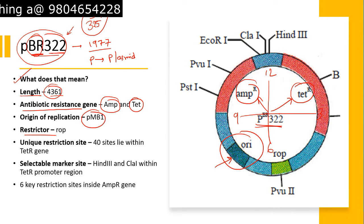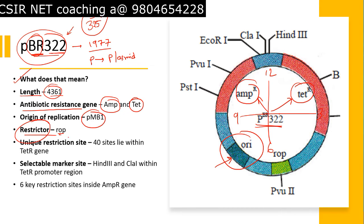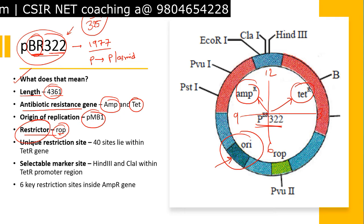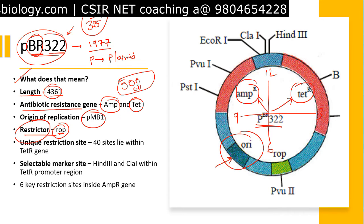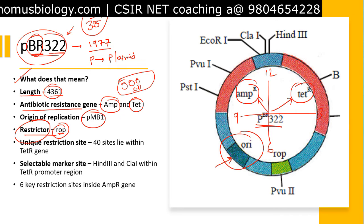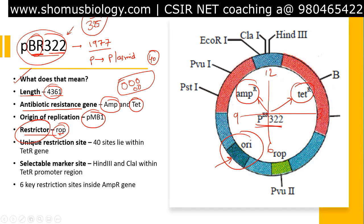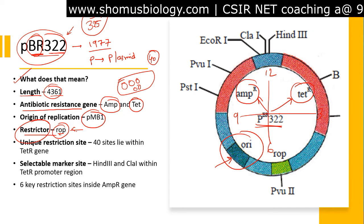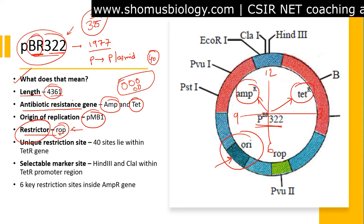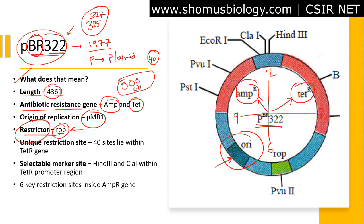PBR322 also has a restrictor region known as ROP. This ROP region is present to restrict the copy number of the plasmid inside the host cell. The copy number is the number of plasmid copies present inside a host cell. Normally plasmids can have higher copy numbers, but in this case we need to maintain a maximum of 40 copies inside the host cell, so the ROP site is used to regulate that.